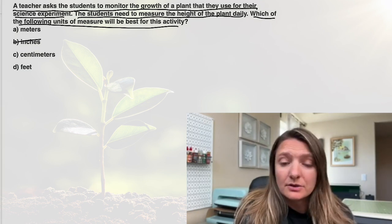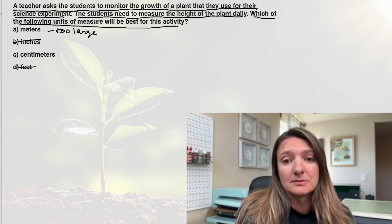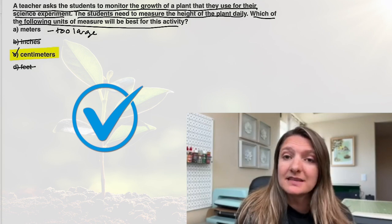Let's get rid of all the imperial measurement systems because we are in science. So inches and feet we can automatically get rid of, so we're left with meters and centimeters. Meters would be way too big to actually measure a little plant. So our answer will be C, centimeters.